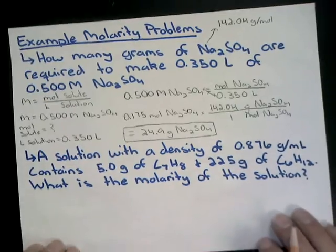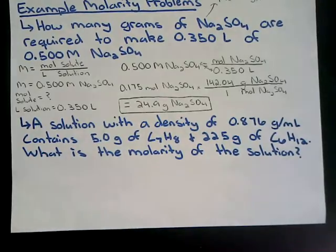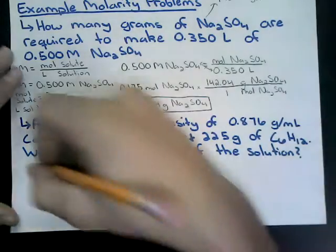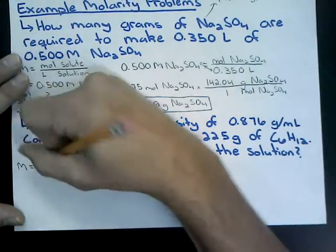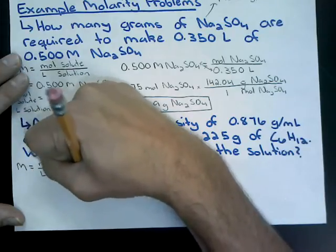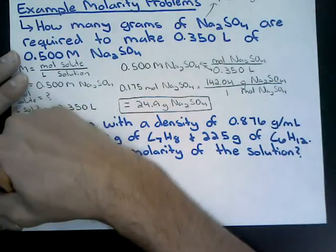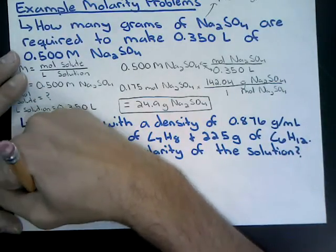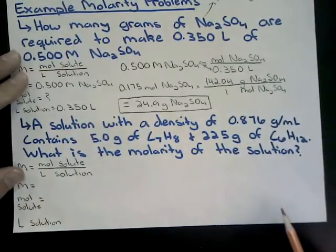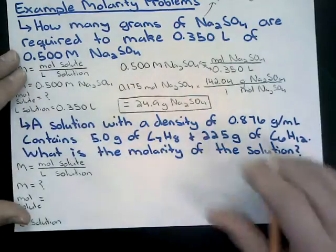Now we'll work with density. A solution has a density of 0.876 grams per milliliter, and it contains 5.0 grams of C7H8 and 225 grams of C6H12. We want to find the molarity of the solution. We start again with M equals moles of solute divided by liters of solution, and our molarity is the unknown.